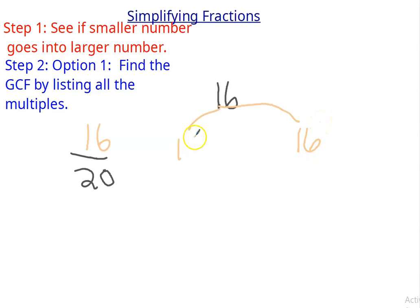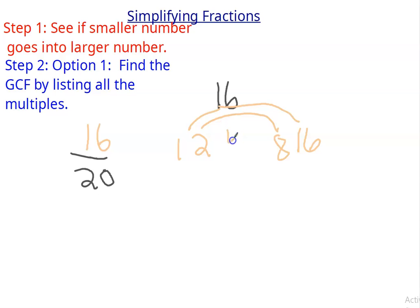2 goes into 16 because 16 is even. So 2 times 8. 3 doesn't go, but 4 does. So 4 times 4. So my factors of 16 are 1, 2, 4, 8, and 16.